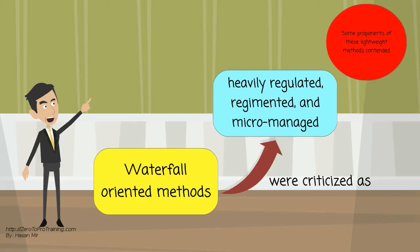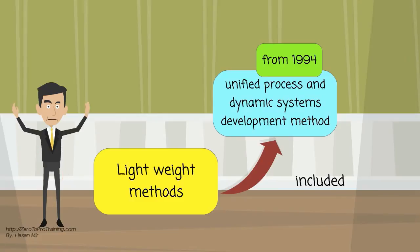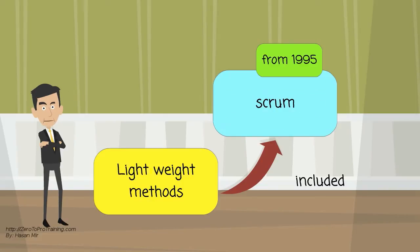Although some proponents of these lightweight methods contended that they were simply returning to earlier software practices, these lightweight methods included, from 1994, Unified Process and Dynamic Systems Development Method. From 1995, Scrum.